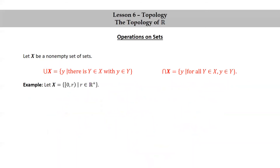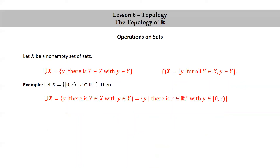Let's do one more example. Let X be the set of half-open intervals from 0 to R, including 0 but not including R, where R is a positive real number. Then union X, rewriting the definition, is the set of y such that there is a positive real number R with y in the half-open interval 0 to R. Let's show that that is equal to the infinite closed interval 0 to infinity.